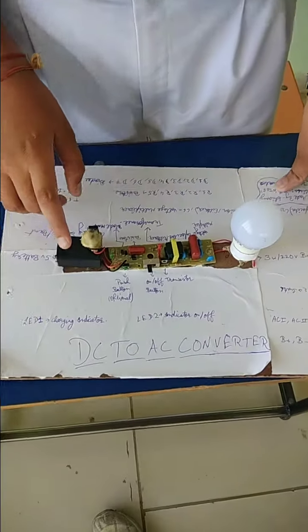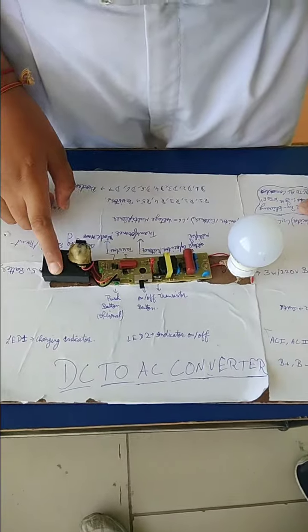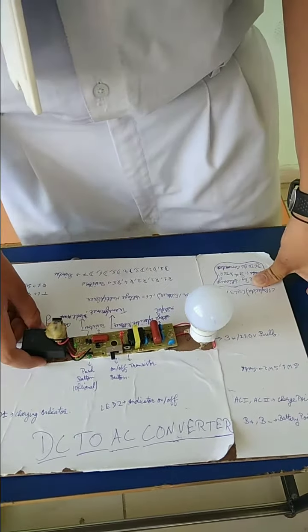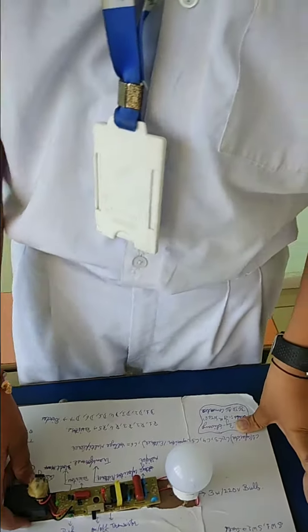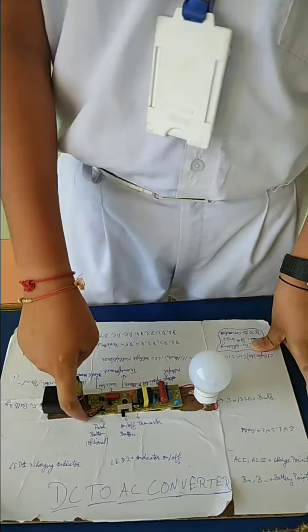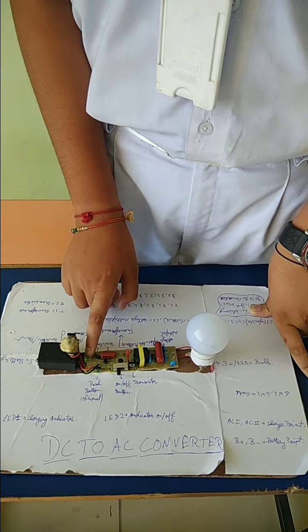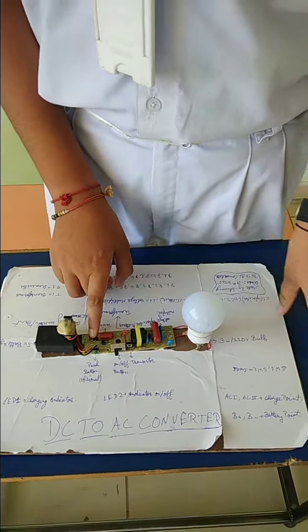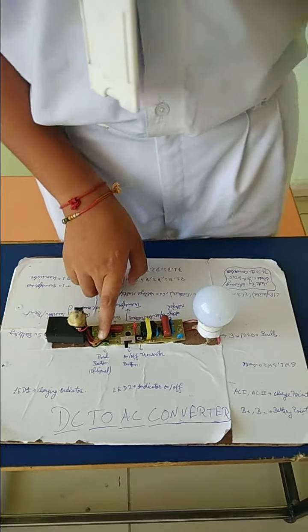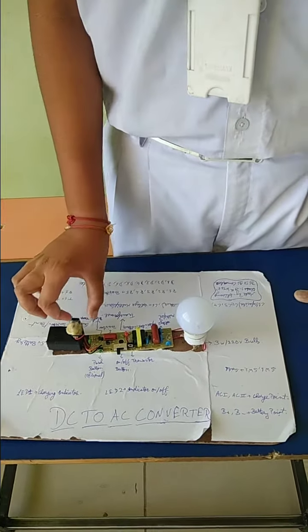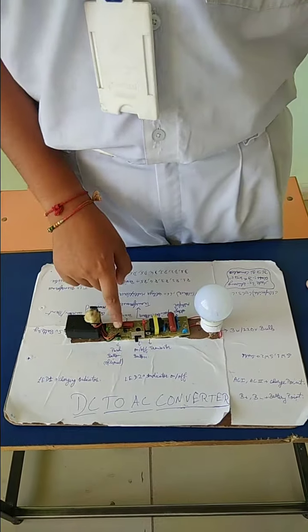Here I have connected a 5 volt battery which will be used to convert this 5 volt into 220 volt. Its wires are placed in AC1 and AC2 which will give the input for charging. This is the charging plug which will charge it.